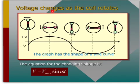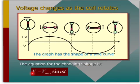Voltage changes as the coil rotates. These five diagrams represent different positions of the coil as it rotates through one complete cycle, and the induced voltage is in the shape of a sine curve. An equation for the changing voltage is V, which is voltage, equal to maximum voltage — that one there or that one there — times sine of omega, which is the angular frequency of rotation of the coil, times time.